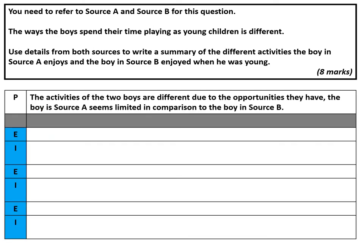So let's think about how we set it out. I've set it out as a table just to make it simpler for you to see. So I'm making my point first: 'The activities of the two boys are different due to the opportunities they have. The boy in source A seems limited in comparison to the boy in source B.' So I have reworded the question to show the examiner I know what I'm going to be saying, and I've said what the main difference is — source A has limited opportunity, source B seems to have other things. That is my point.